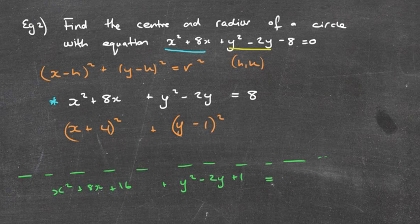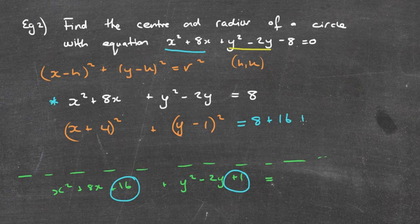Likewise, instead of having y squared minus 2y, I've got this extra plus 1. So how do I make sure that my equation is balanced correctly? Well, what I add to the left-hand side, we must add on to the right-hand side. So I'm going to add on 16. I'm going to add on 1.